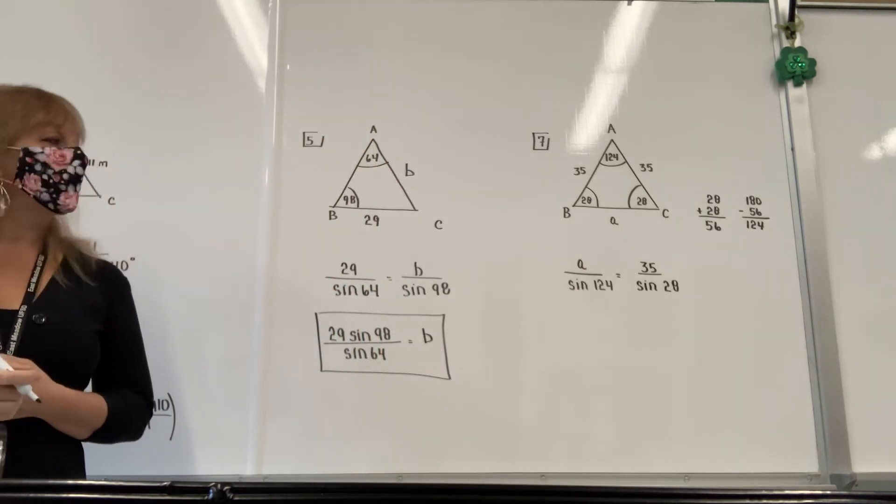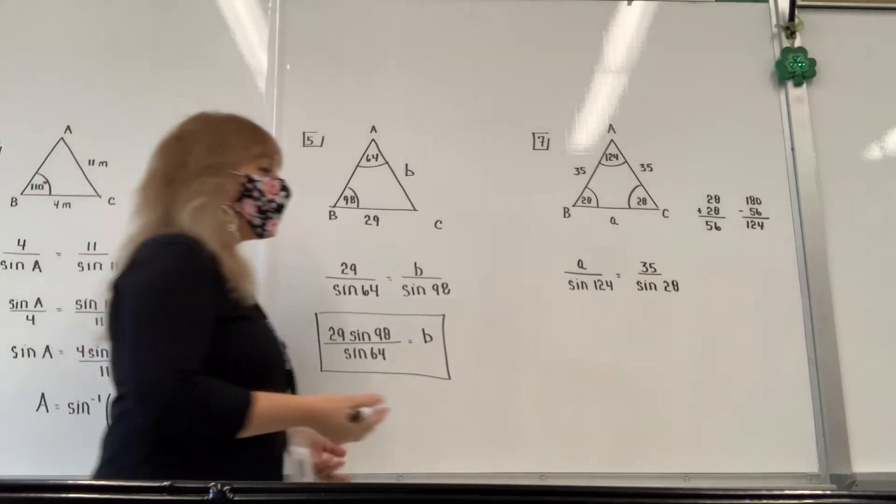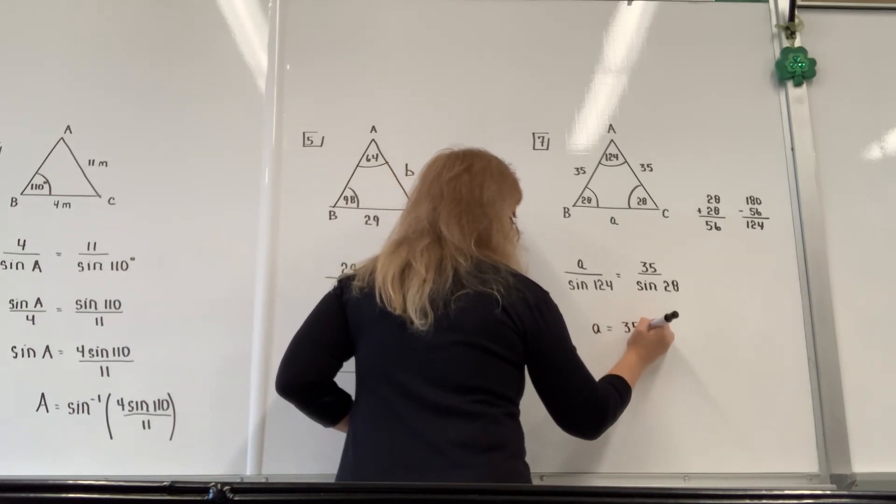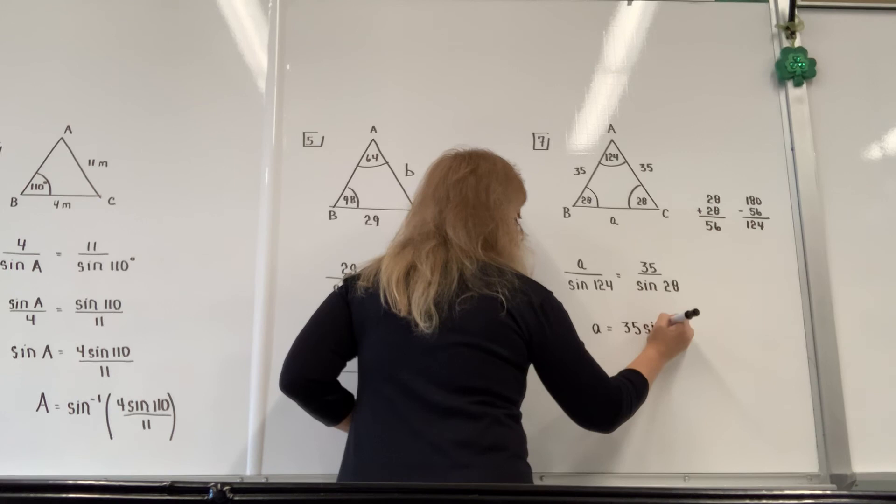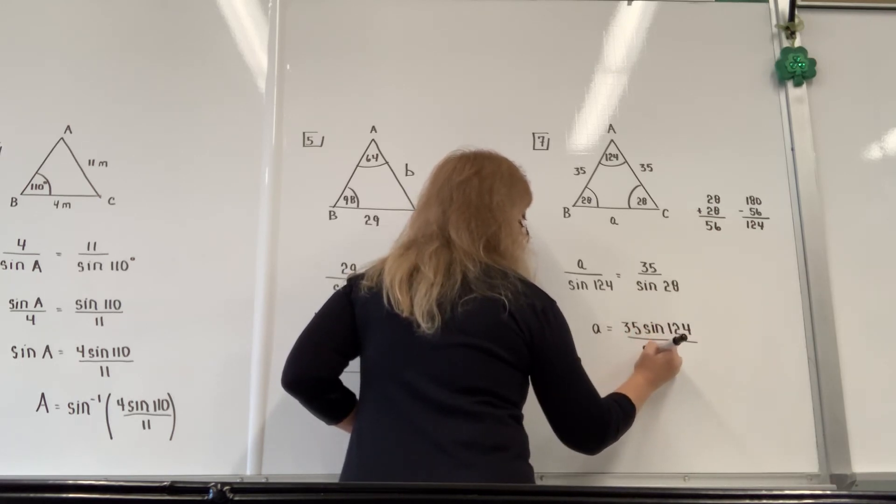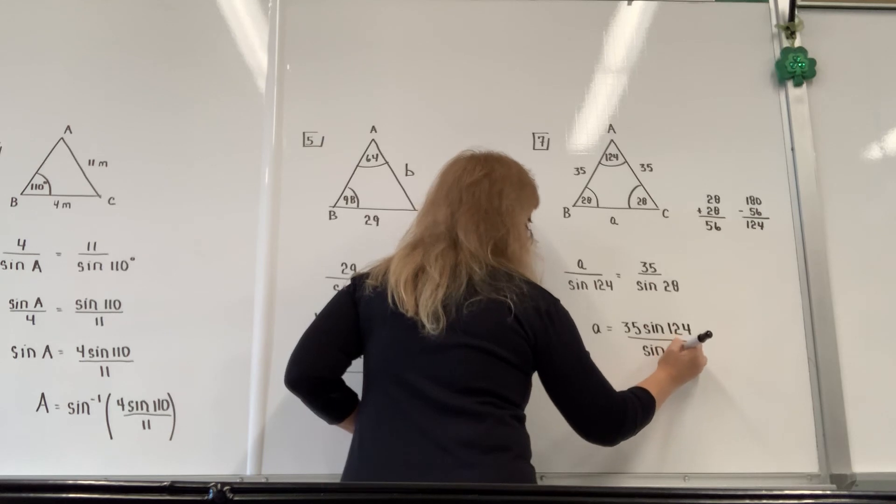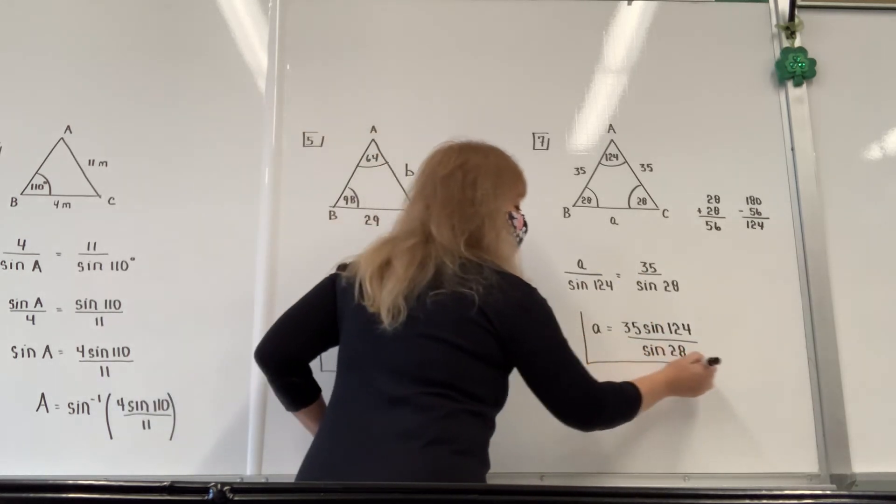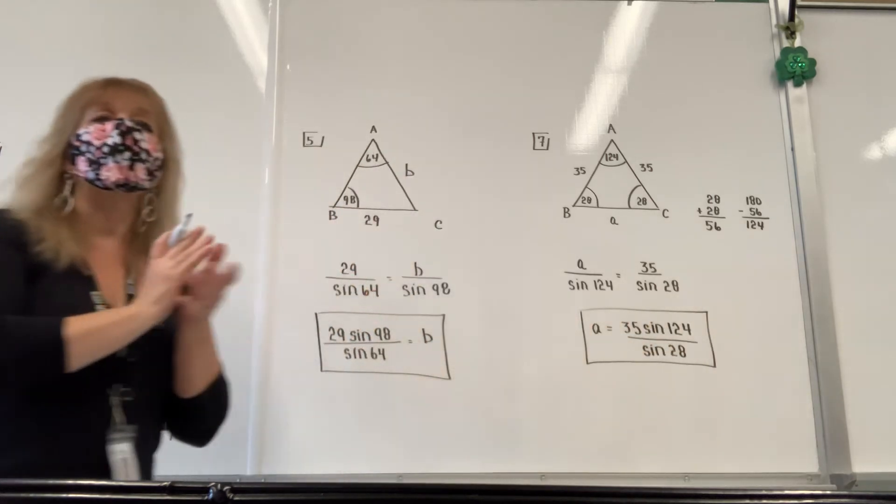And then to solve for a, all I have to do is multiply both sides by the sine of 124. So the way you present your answer on paper is 35 times the sine of 124. You only multiply it by the numerator. All divided by the sine of 28. And remember, nothing reduces. That's what you just type into the calculator to get the value of a. Okay, any questions so far?